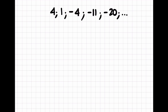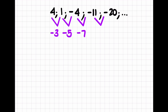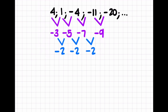Next sequence: 4, 1, minus 4, minus 11, minus 20. First difference: 1 minus 4 is negative 3; minus 4 minus 1 is negative 5; minus 11 minus minus 4 is minus 7; minus 20 minus minus 11 is minus 9. That's not a constant first difference. Second difference: minus 5 minus minus 3 is negative 2; minus 7 minus minus 5 is negative 2; minus 9 minus minus 7 is negative 2. So we have a constant second difference — this is a quadratic.